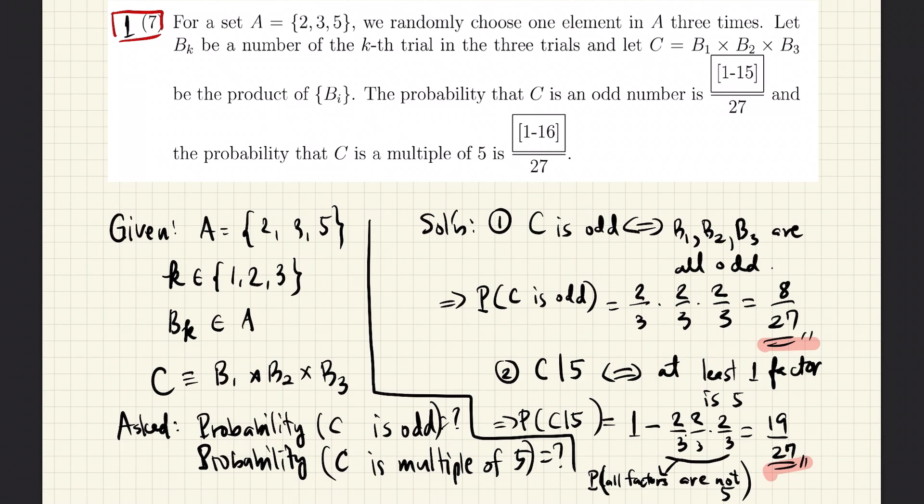We are given a set of numbers called A. A has the following elements: 2, 3, and 5. Then we are to pick a number from A, and we call that number B.